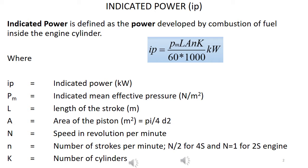So, IP equals P, i.e. Mean Effective Pressure, times L, A, N, K, divided by 60,000, to get the IP in kWatts.